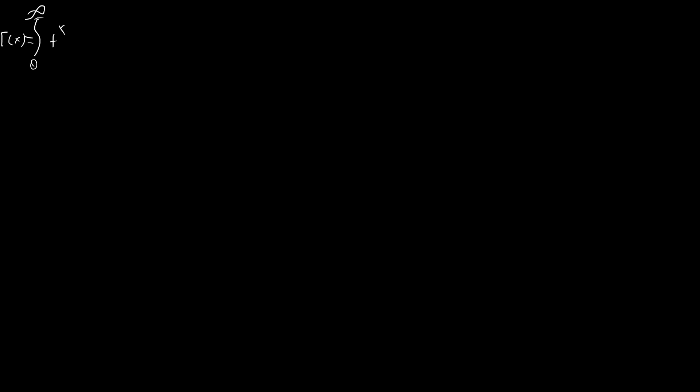As you saw in the last slide, this was the definition of the gamma function: Gamma of x equals the integral from zero to infinity of t to the x minus 1, e to the negative t, dt. The first thing we're going to show is that this is also equal to x minus 1 factorial, for x greater than or equal to 1 and x an integer.